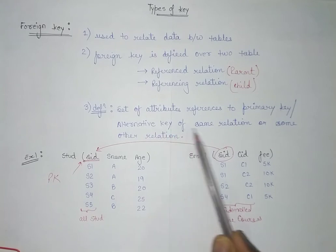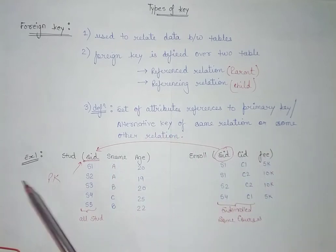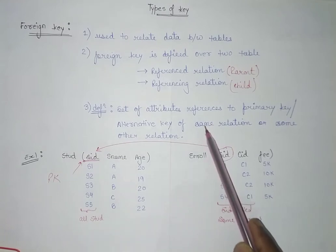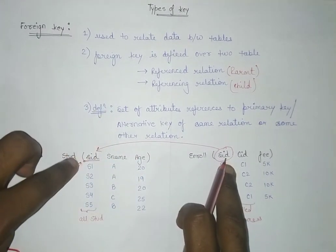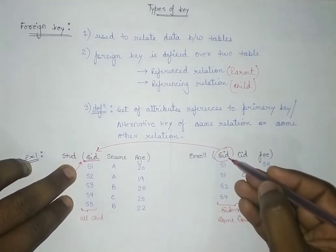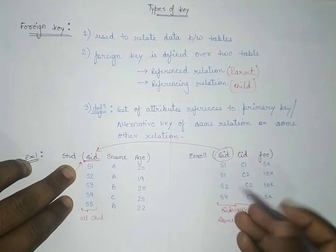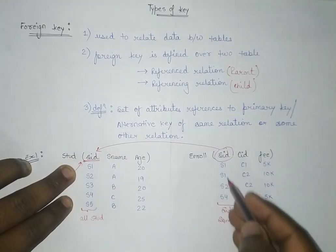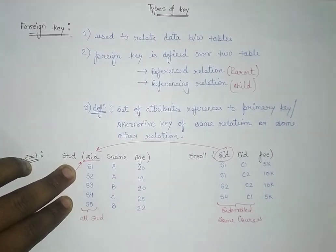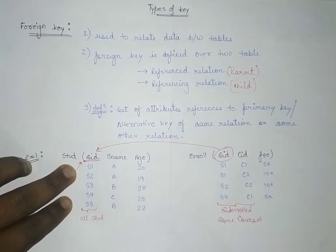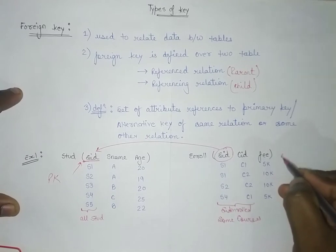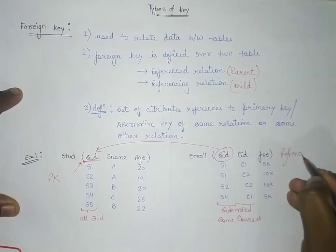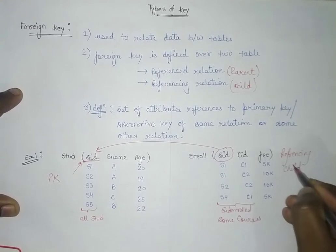The definition says a set of attributes references the primary key or alternative key of the same or some other relation. Here we are talking about two different relations. The student ID in the Enrolled table is referring to the student ID in the Student table, meaning the IDs listed in Enrolled must be taken from the Student table. If we try to use S6 and S6 is not present in Student, that is not allowed.